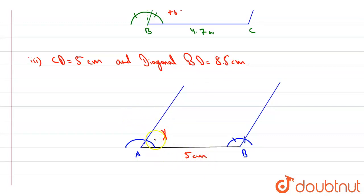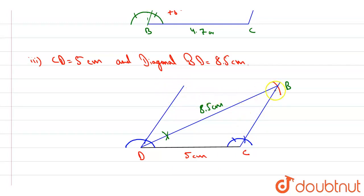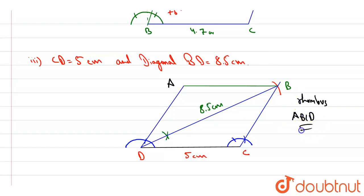Since all sides of the rhombus are equal, mark 5cm on both rays from A to get points D and C. From point A along the bisector, cut an arc of 8.5cm to locate point B — the diagonal BD=8.5cm. Join point B to D and complete the rhombus by joining all vertices. The rhombus ABCD is now fully constructed for all three parts.